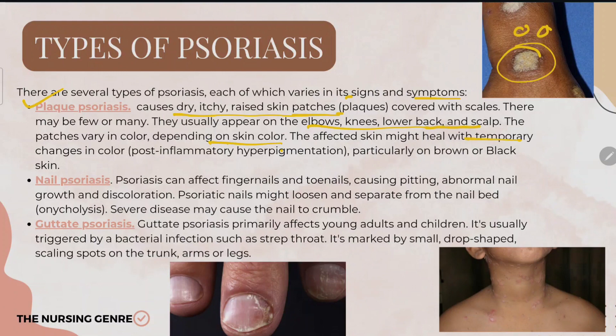The affected skin might heal with temporary changes in color, particularly on brown or black skin — this is known as hyperpigmentation. In darker skin tones, the patches tend to appear in a dark, dry form.